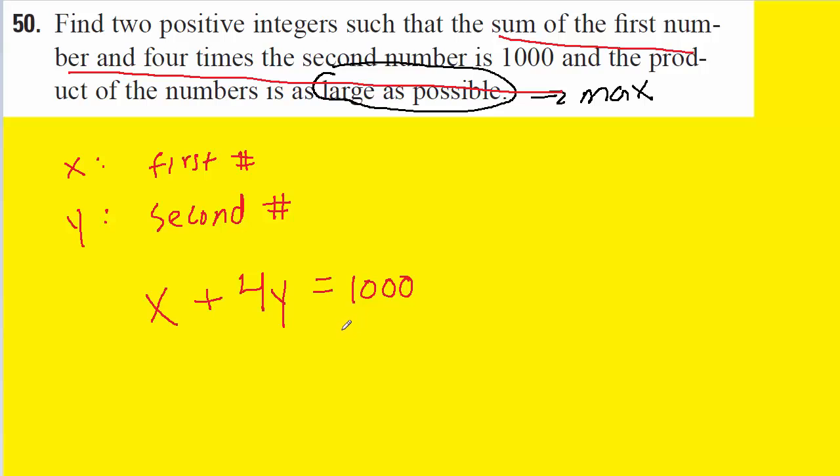We'll next need to find the objective equation and that's going to come from the second half of the sentence. It tells us that the product, which we can call p, of these two numbers has to be as large as possible. So the product can be written as p equals x times y, and it's the product that we are seeking to maximize.